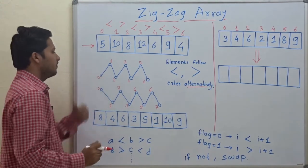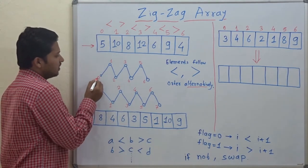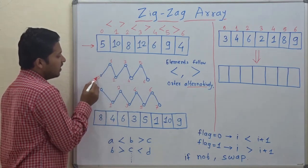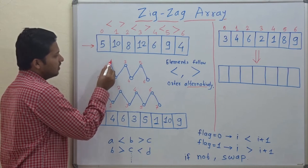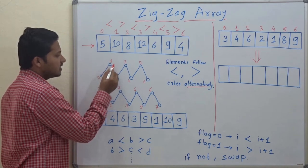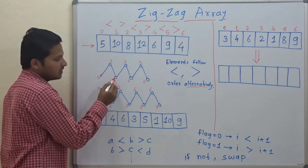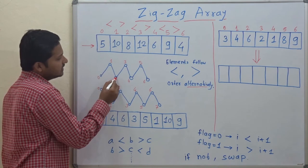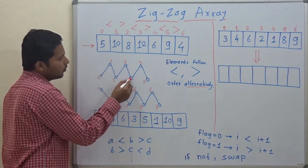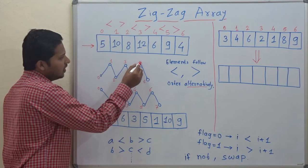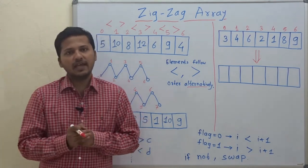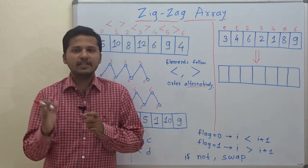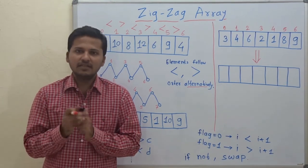Here I have written the indices. The element at index 0 is less than the element at index 1. Then index 1 is greater than index 2. Then second is less than third, third is greater than fourth, fourth is less than fifth, and fifth is greater than sixth. In short, in a zigzag array the elements are alternatively less than and greater than each other.